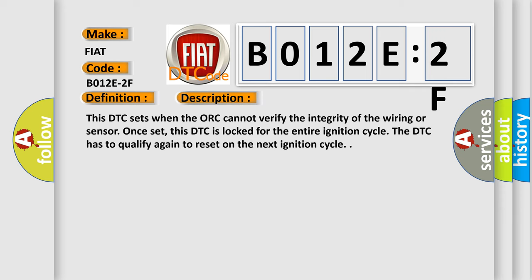This DTC sets when the ORC cannot verify the integrity of the wiring or sensor. Once set, this DTC is locked for the entire ignition cycle. The DTC has to qualify again to reset on the next ignition cycle.